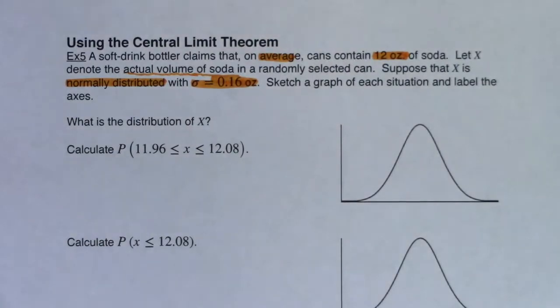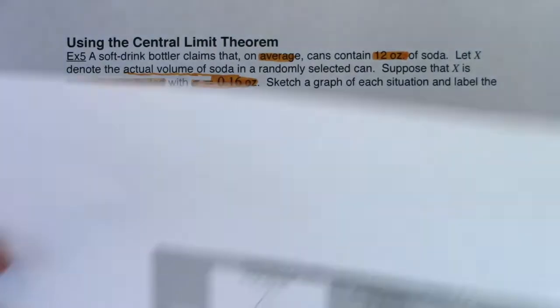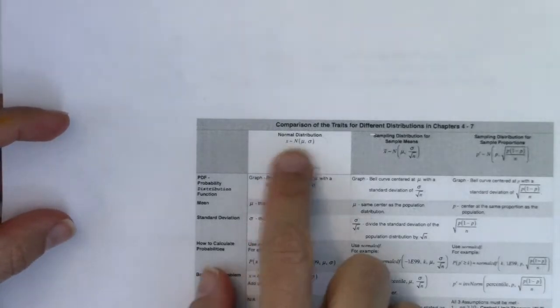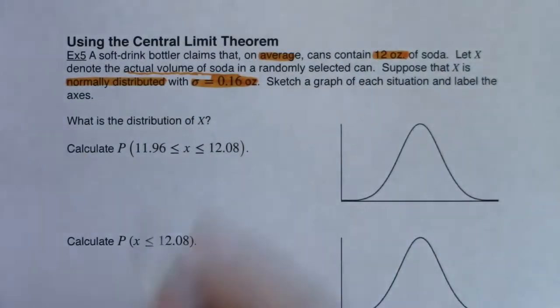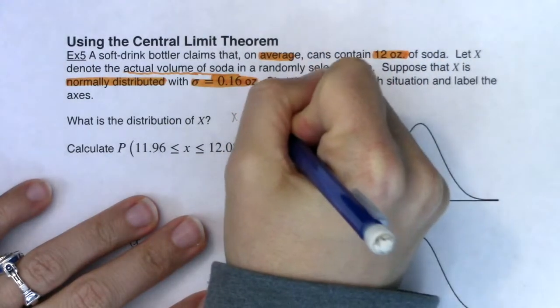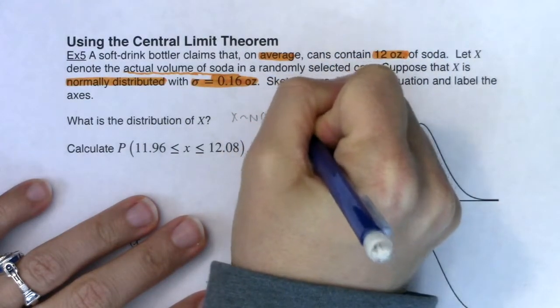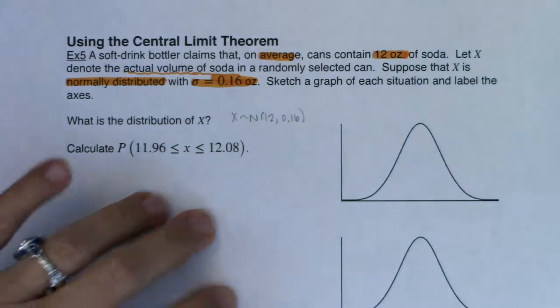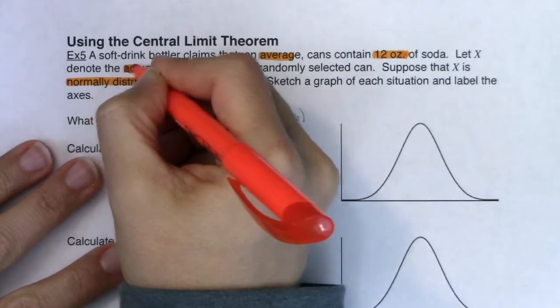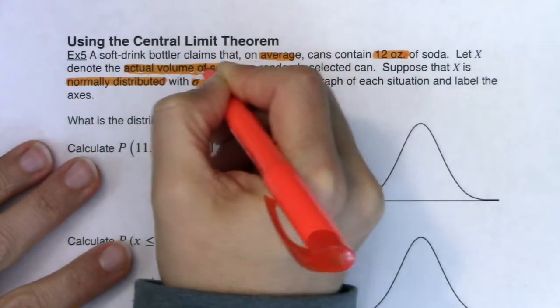When I say what is the distribution here, what is the probability distribution? I can make a graph, but really I want that symbol — we want the squiggles. So what was the distribution? Soda volume is normal in shape with an average of 12 and a standard deviation of 0.16. And I'm just going to go ahead and highlight the variable here.